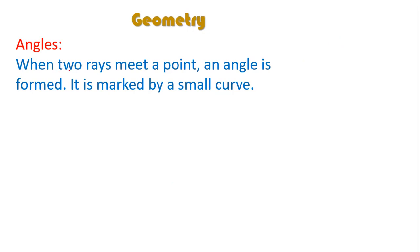To form the angle we need two rays. So I will take first ray and another ray also I will take and both together will meet at this point. Where this will meet then we will say that angle is formed here.